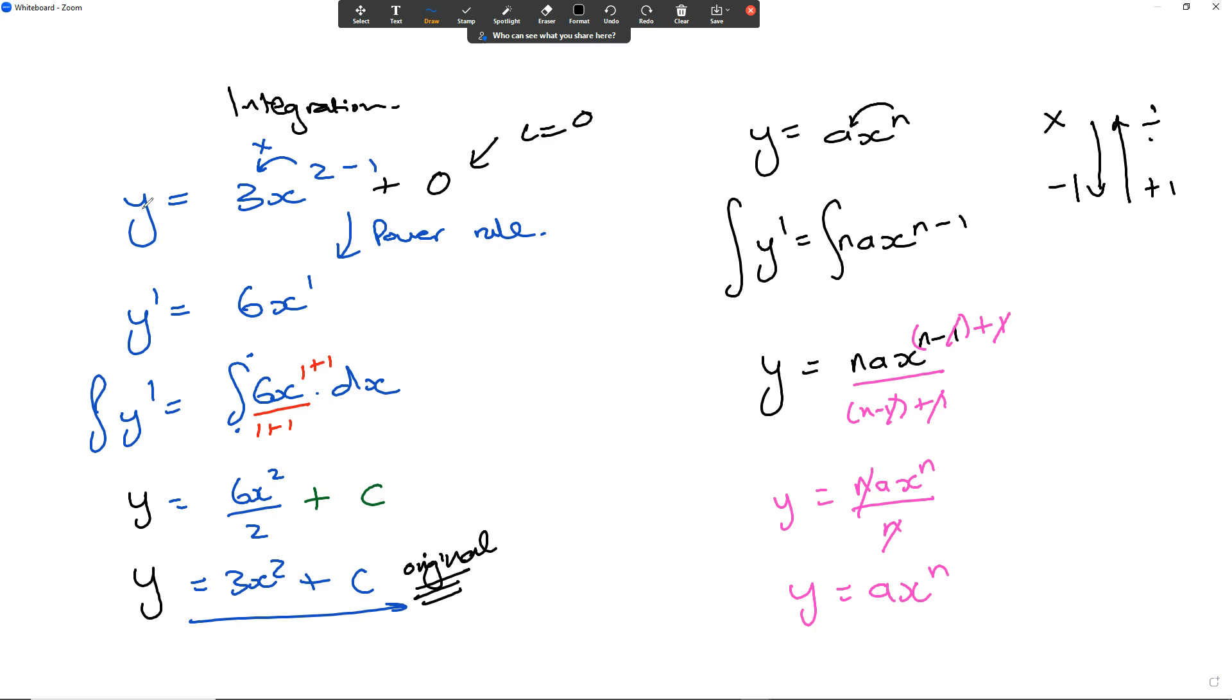In order to find the c value, we need a coordinate. If I change x and y into some coordinate given, then I can find the exact c value. In this case, because the c value is 0, it means that x is 0 and y is 0.